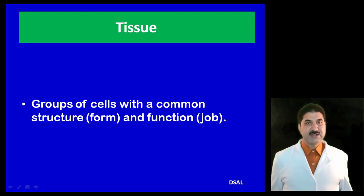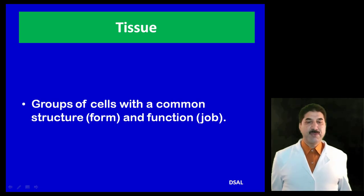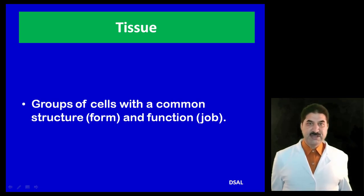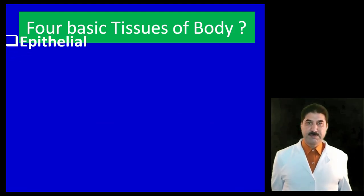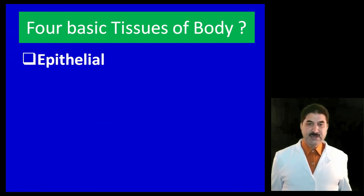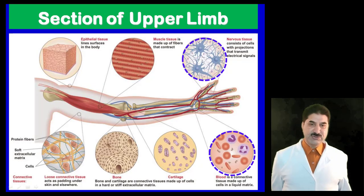What is a tissue? A tissue is defined as a group of cells with a common form — that is, structure and function. There are four basic tissues of our body: epithelial tissue, connective tissue, muscular tissue, and nervous tissue.